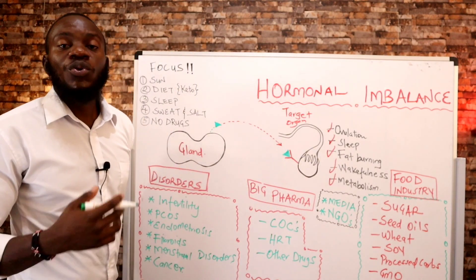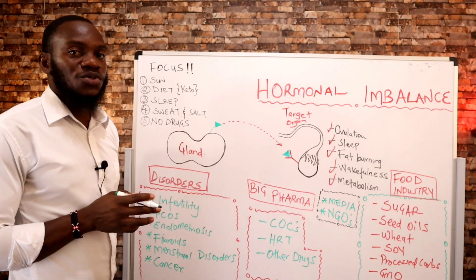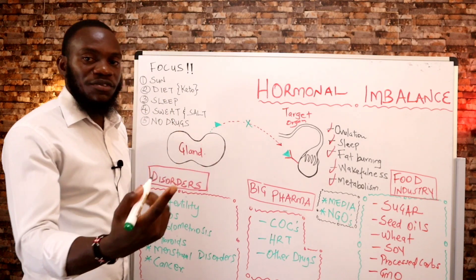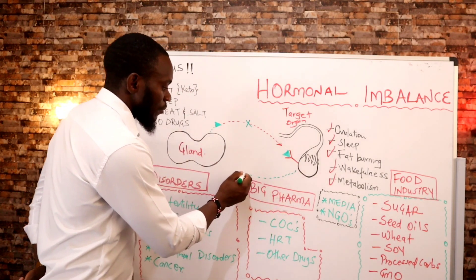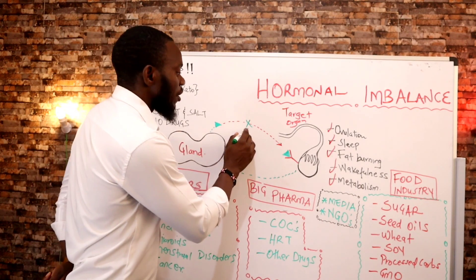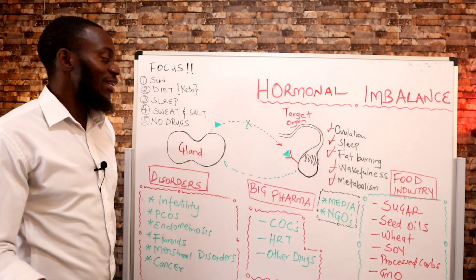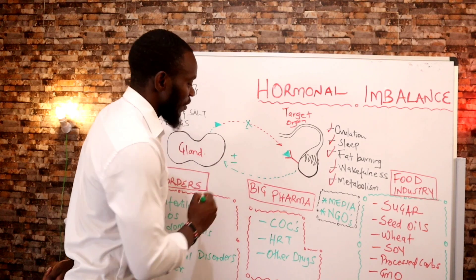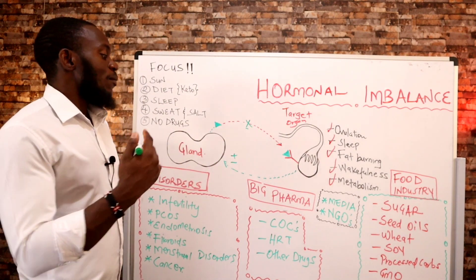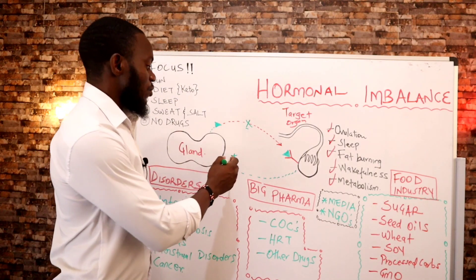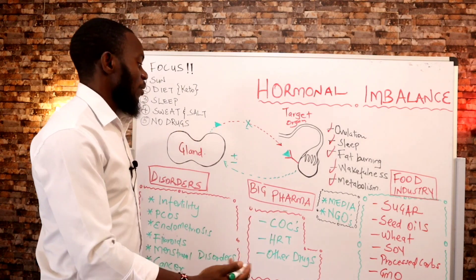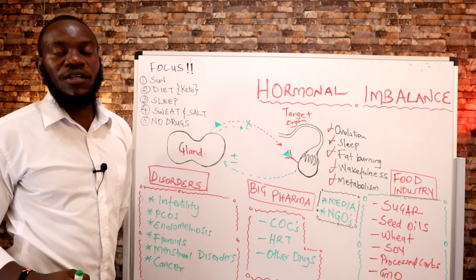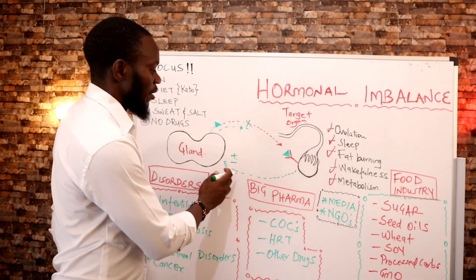After ovulation or the menstrual cycle occurs, it has to stop at some point. The target organ sends a signal back to the gland through negative feedback — telling the gland there's enough of this hormone, stop producing it. There's also positive feedback, which keeps telling the organ to produce more, causing imbalance. We need negative feedback to stop excess hormone production so the body returns to normal.